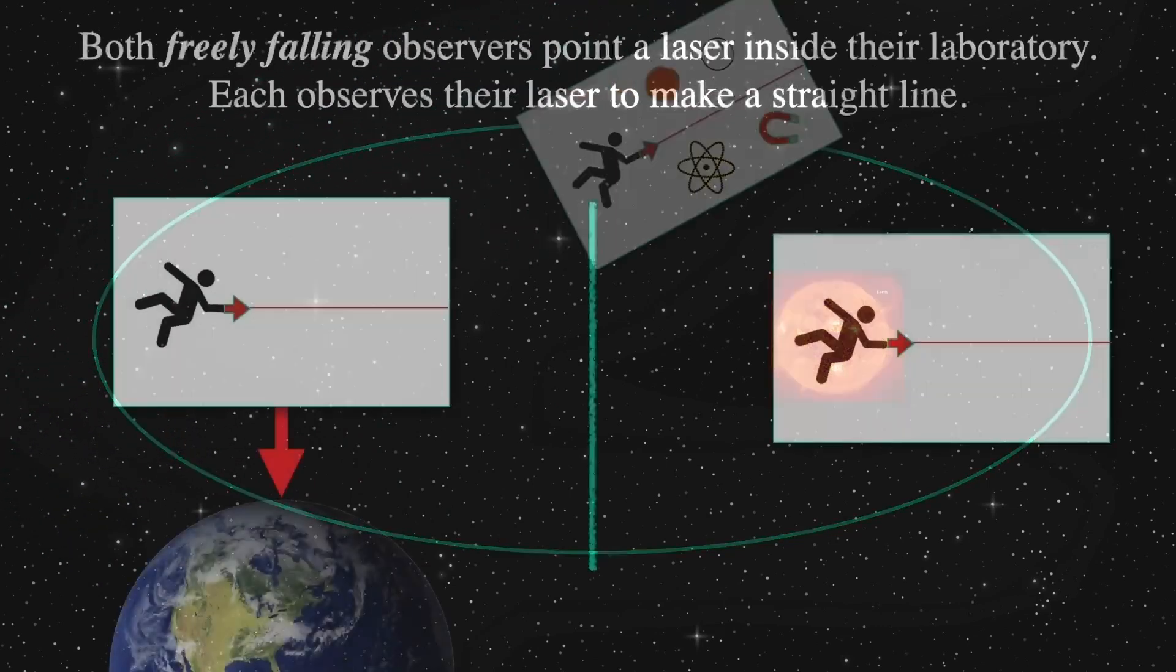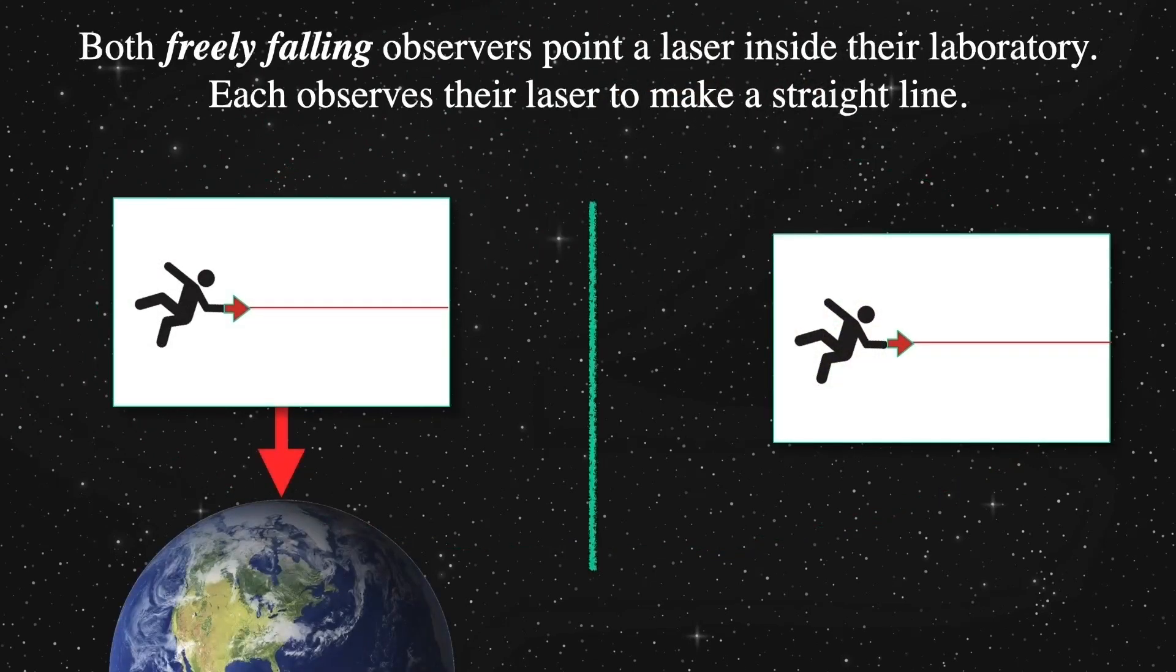Let's look at one experiment. A laser. In both instances, we see the labs are freely falling. In both cases, we say they are in inertial reference frames and the laser goes across the room in what the experimenter measures to be a straight line.